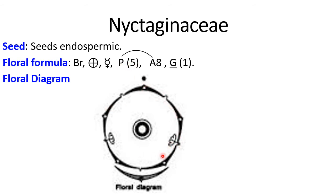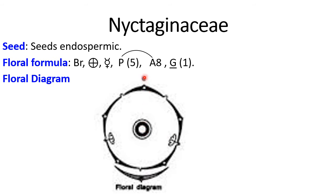The stamens here are represented as 8, because this floral formula is of the plant Mirabilis, while this floral diagram is of the 4 o'clock plant, so the number is not exactly 8 — it is represented as only 2. That is why these differences are seen. The ovary is monocarpellary or unilocular. This is actually the floral diagram with bract, perianth, androecium, gynoecium, and mother axis.